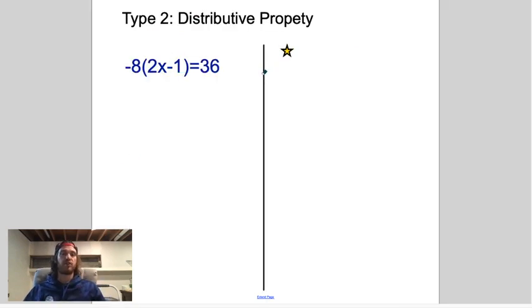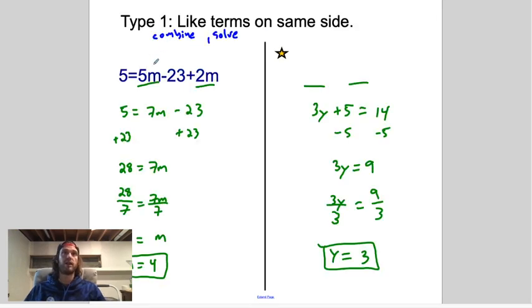These are ones that involve the distributive property. Now some of these equations might be a combination of Type 1 and Type 2. So after you distribute, you may have to combine like terms before you begin solving. But the steps for solving an equation like this are you want to always distribute first if you can. Then you're going to combine like terms only if they're on the same side of the equation.